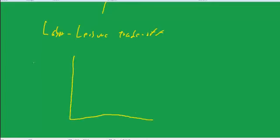Alright, so let's do a labor-leisure trade-off. So this would be hours of leisure, and this would be your dollar income.